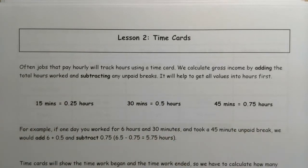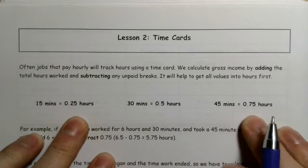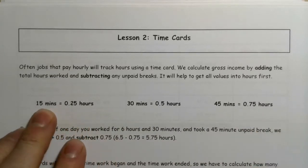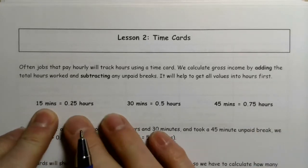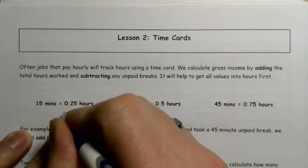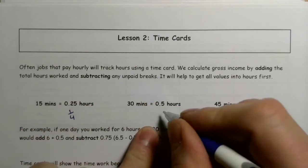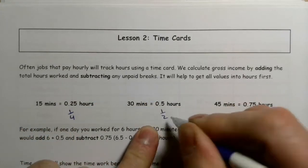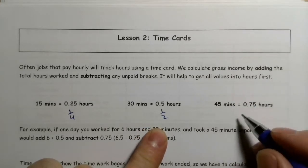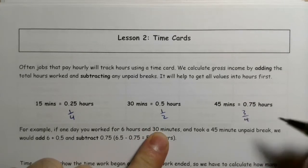It'll help to get a sense of the values first. At 15 minutes, remember, that's going to be 0.25 of an hour, or a quarter of an hour. 30 minutes is 0.5 of an hour, or half of an hour. 45 minutes is three quarters of an hour, or 0.75.